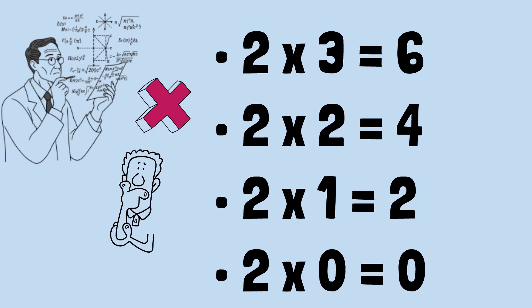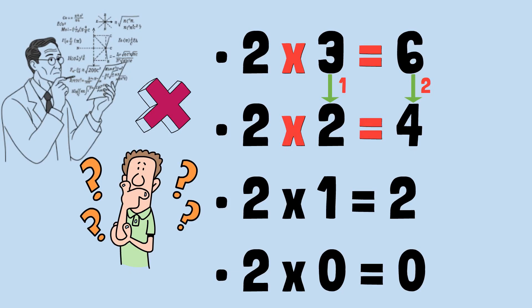Look at this list carefully. Do you notice anything happening as we move from one line to the next? Each time we decrease the second number by 1, the result decreases by exactly 2. From 2 × 3 = 6 to 2 × 2 = 4. We decrease the second number by 1, and the product decreased by 2. From 2 × 2 = 4 to 2 × 1 = 2. Again, we decrease the second number by 1, and the product decreased by 2. From 2 × 1 = 2 to 2 × 0 = 0. Once more, we decrease the second number by 1, and the product decreased by 2. This pattern is so consistent, so reliable, that it demands we continue it.